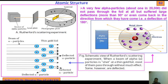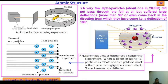So, very few alpha particles came back — deflection of 180 degrees. This is the schematic representation of the Rutherford scattering experiment. When a beam of alpha particles is shot at a thin gold foil, most of them pass through without much effect, some are deflected, and a very few return back.